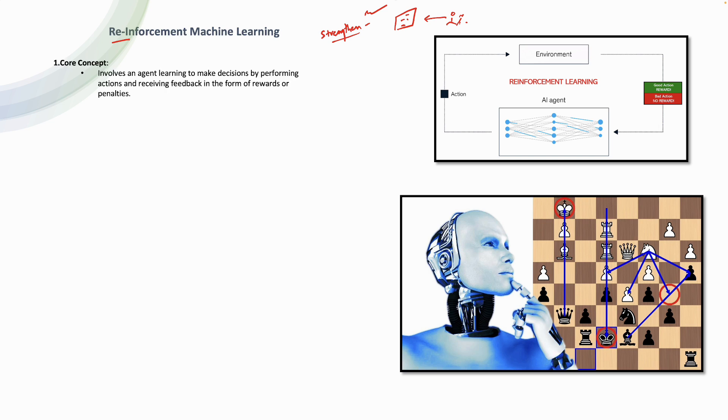The core concept is there is an AI agent. Remember, there is an AI agent within reinforcement learning. Whenever you talk about reinforcement learning, there will always be a mention of an AI agent. This involves the agent learning to make decisions by performing the action and receiving the feedback.